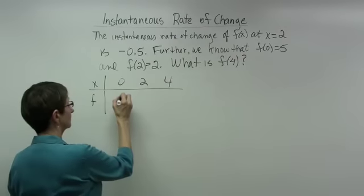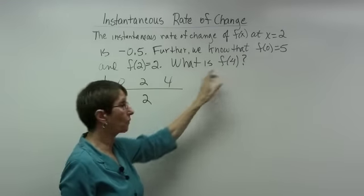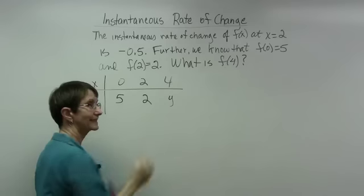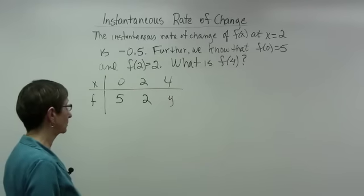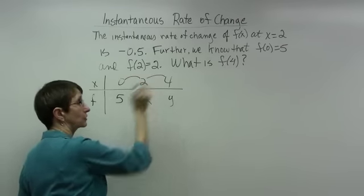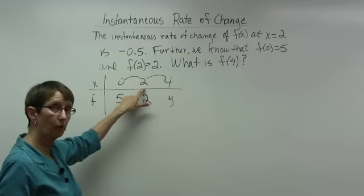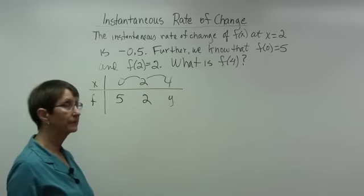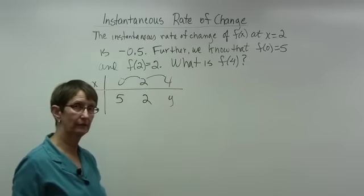When x is 0, the f value is 5. When x is 2, the f value is 2. When x is 4, I don't know — that's what I'm looking for, so I'll call it y. Since 0, 2, and 4 are 2 units apart on each side, they are equally spaced around x equal to 2, so we can use the shortcut method.